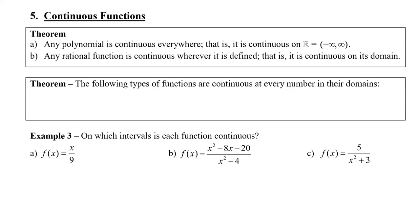In this video, we're going to continue taking a look at where functions are continuous. One of the main types of functions that you'll often see are the polynomials, and for polynomials, you'll know that they're continuous everywhere. We can say that they're continuous on all the real numbers, or from negative infinity to positive infinity, with the open brackets, meaning that the endpoints are not contained. Now, in a rational function, we also say that they're continuous, but wherever it is defined — so that is continuous on its domain. And we know that it's not continuous where we have division by zero.